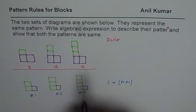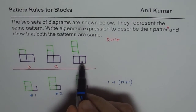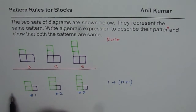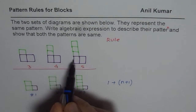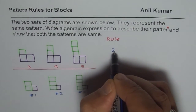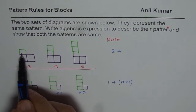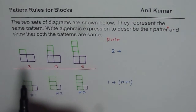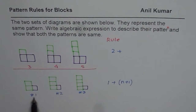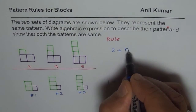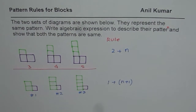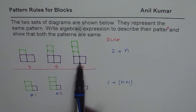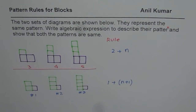Now let's write down the rule from the top pattern. In this case, we see that two units are fixed. So we write two plus what is changing. The changing part is one, then two, then three — which is one for figure one, two for figure two, three for figure three. That means the changing part is n. So two plus n is the rule when we shade in the way shown here. These are the pattern rules.